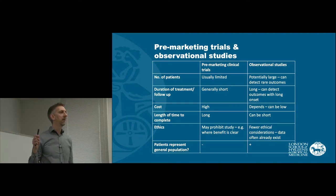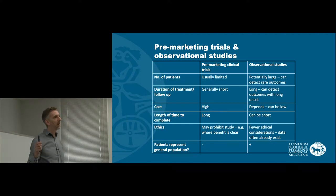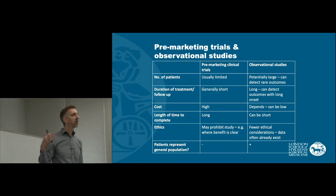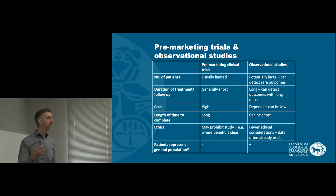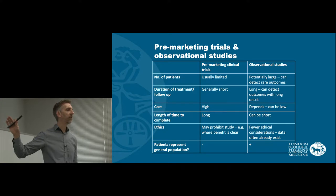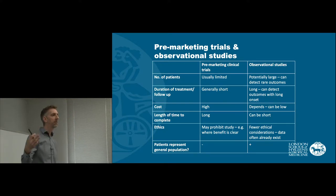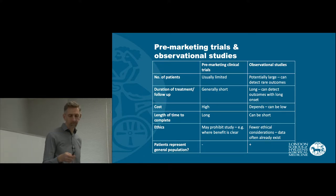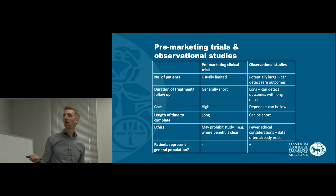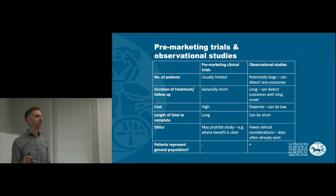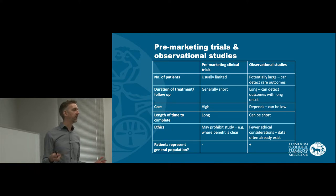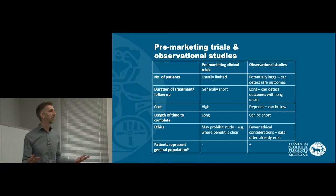The ethics of the studies are very different. The ethics of a randomised trial may mean that we can't do a study — if there's already a clear known benefit of a treatment, we may not be able to randomise people to that treatment, whereas we can do an observational study where we simply look at what did people prescribe for their clinical reasons. The patients included in a pre-marketing trial will tend not to represent the population that will be exposed, whereas observational data from electronic health records will be driven entirely by people from the general population.